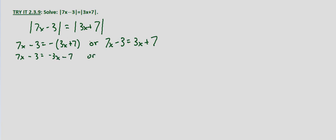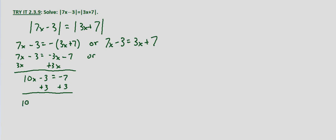Adding 3x to both sides gives us 10x minus 3 equals negative 7. Add 3 to both sides: 10x equals negative 4. Dividing both sides by 10, that's negative 4 tenths, which simplifies to negative 2 fifths.